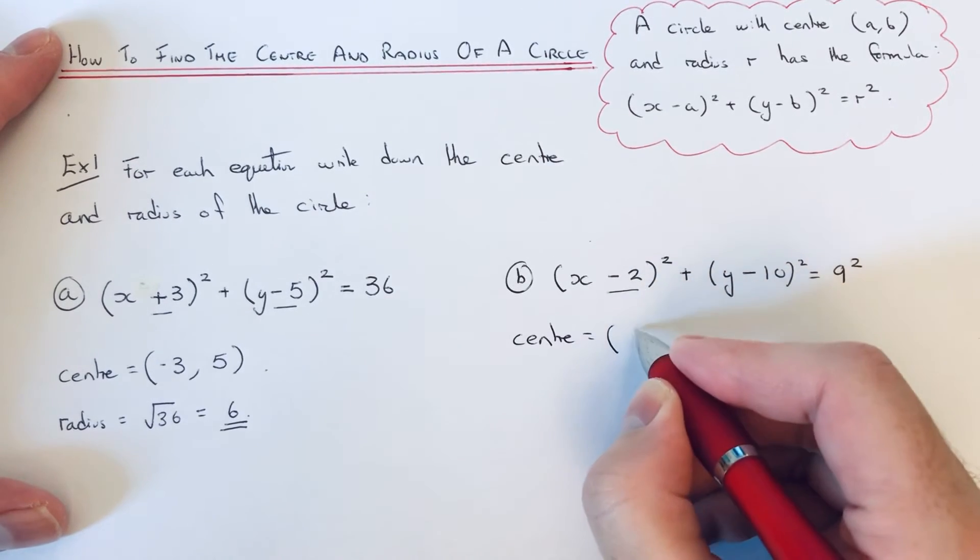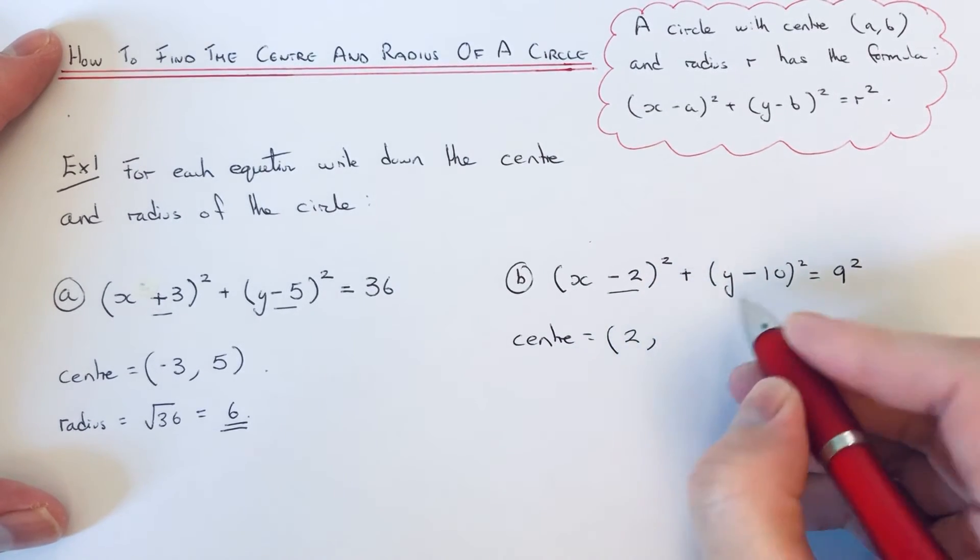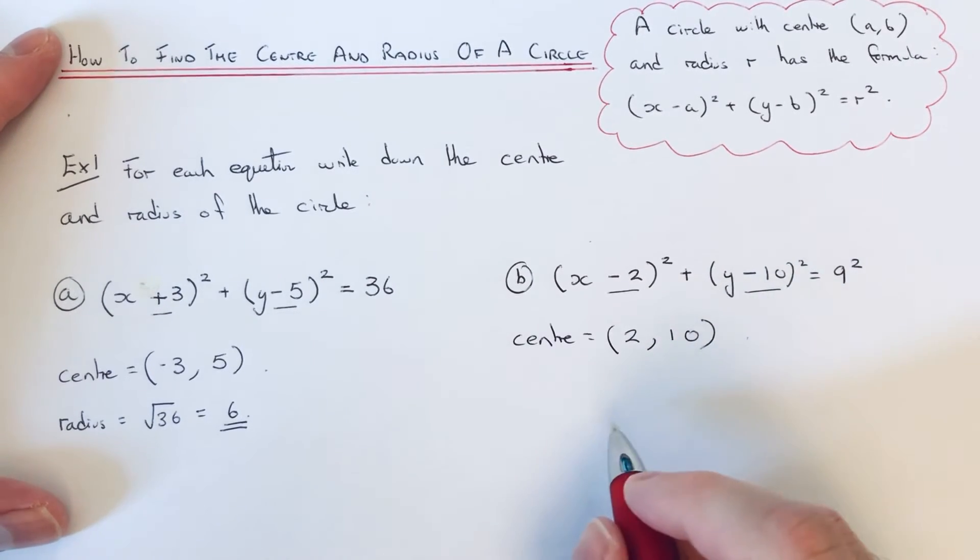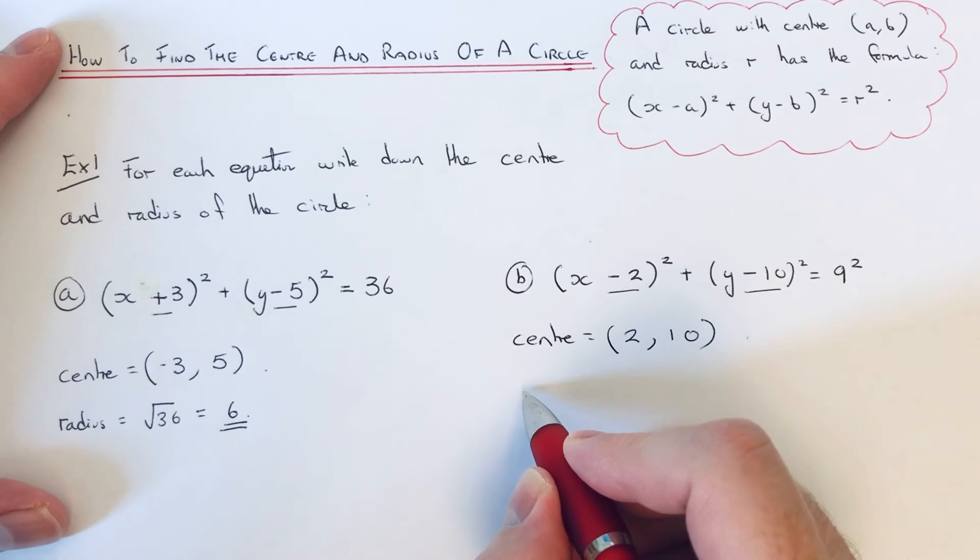So if we change the sign of minus 2, that's plus 2. Change the sign of minus 10, that's plus 10. So that is the centre of the circle, 2, 10.